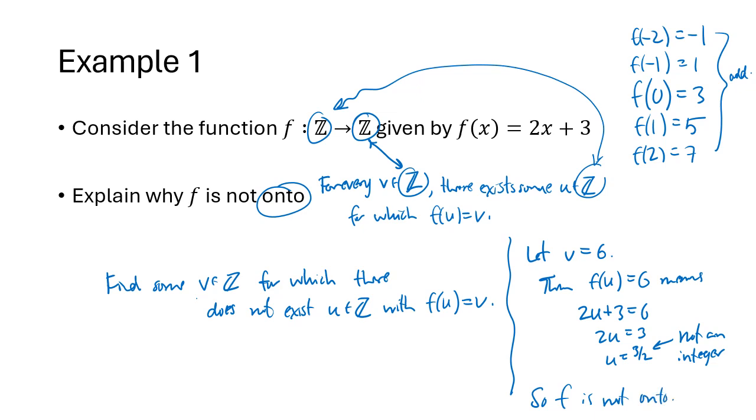So to show that a function is not onto, you have to find something in the codomain for which there is no possible domain element that gives you that codomain element as a result of plugging into the function.